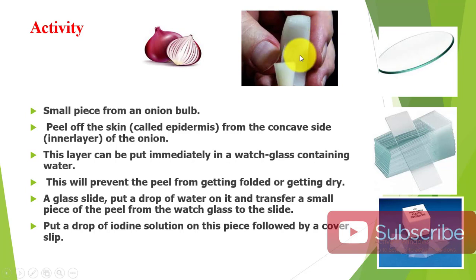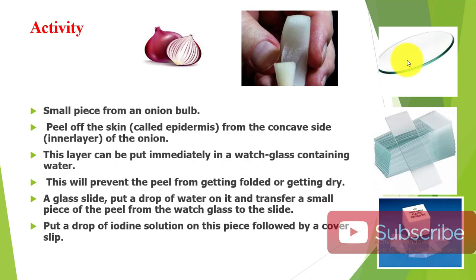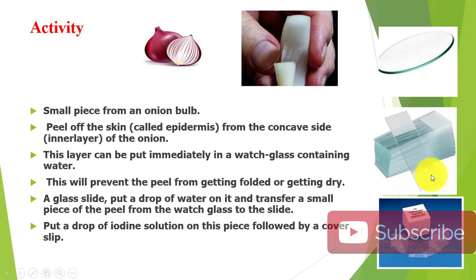We peel off the layer from the concave inner side of the onion and place it immediately in a watch glass with a little water. This prevents the peel from folding and drying. Then we take a glass slide, put a drop of water on it, and transfer the peel from the watch glass onto the slide. We add a drop of iodine solution on the peel, followed by a cover glass. This creates a temporary mount.